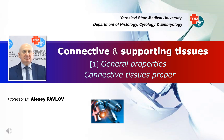Unlike other tissue types — epithelium, muscle, and nerve tissues — which are composed mainly of cells, the quantitatively predominant component of connective tissues is the extracellular matrix. The diversity of connective tissue types in the body is due to differences in the composition and quantity of cells and intercellular substance, which together are responsible for the amazing structural, functional, and pathological diversity of connective tissues.